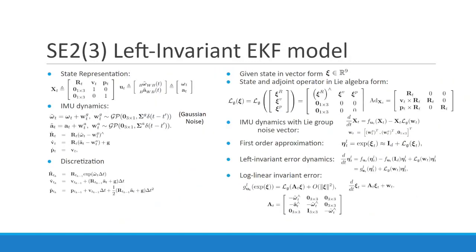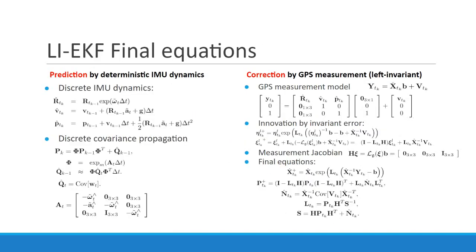In our LIEKF algorithm, we convert the state into the SE2(3) Lie group and convert the IMU dynamics accordingly. By first-order approximation, we develop the log-linear error dynamics with error vector xc and extract the linear system matrix AT. We use deterministic dynamics for prediction, and using AT, we calculate the covariance estimate. Then using zero-order hold integration, we convert them into discrete time form.